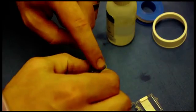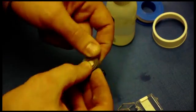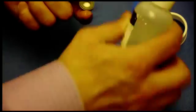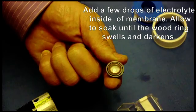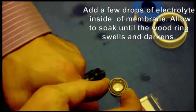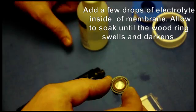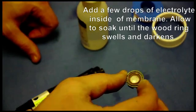What you want to do is place the wood ring into the membrane assembly and then fill it up with your electrolyte solution. Put it cup facing up, fill the solution all the way to the brim, and then set it aside and let the wood ring absorb the electrolyte solution.